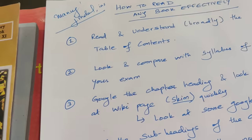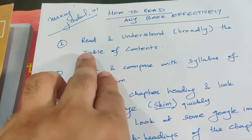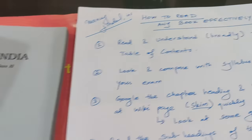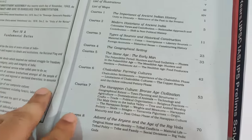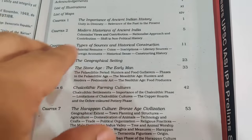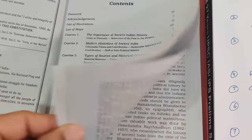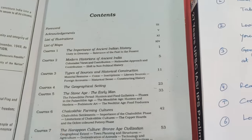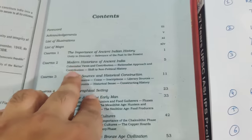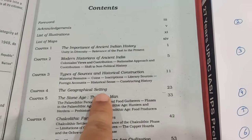Let's jump into this class. The first important step is to read and understand broadly the table of contents. Every book has a table of contents — try to read it from a holistic, overall broad perspective. For example, in this Ancient India book for Class 11, the chapter headings include the importance of ancient history, modern historians of ancient India, types of sources and historical construction, and the geographical setting.